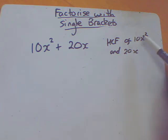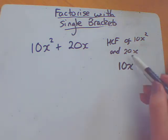So first things first, deal with the numbers. So what's the highest common factor of 10 and 20? It is in fact 10. Then deal with the letters. So what is the highest common factor of x squared and x? Well, they've both got an x in common. This has only got a single x, so it's just a single x that goes down here. So that is now my highest common factor.